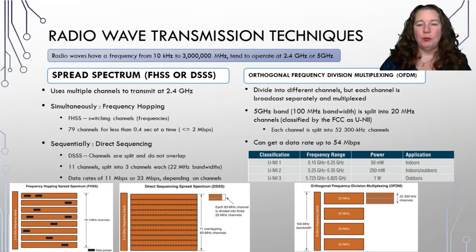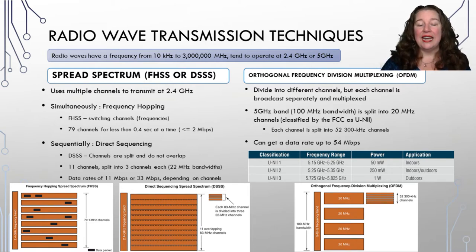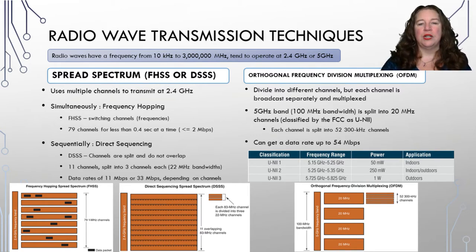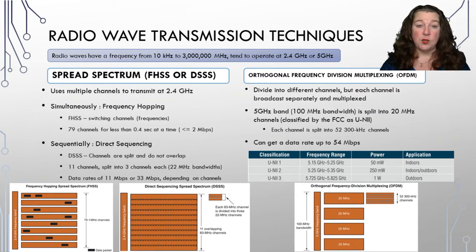Radio waves can range from as low as 10 kilohertz all the way up to 3 million megahertz, but generally we work in the 2.4 and 5 gigahertz ranges. We split radio wave transmissions into two different versions: spread spectrum and orthogonal frequency division multiplexing, which we'll talk about now. Let's start with spread spectrum.